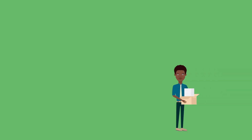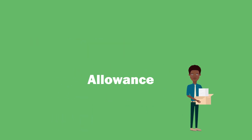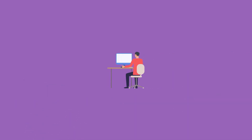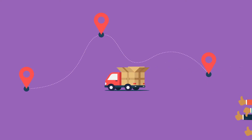While not true for all, some Futures Contracts permit differentials, also known as an allowance. Such Futures Contracts permit a short position to make adjustments to the location of delivery and/or the grade or standard of the commodity to be delivered.